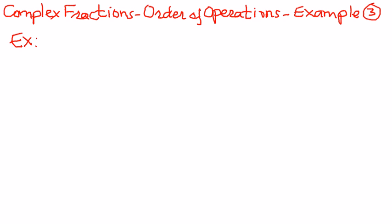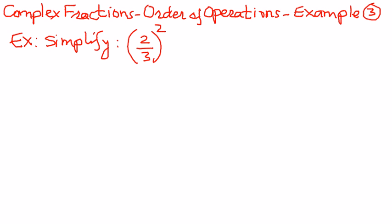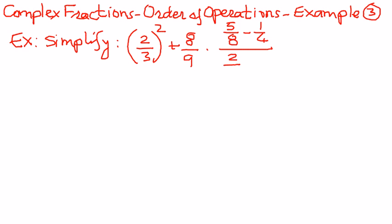We want to simplify this complex fraction: 2 over 3, this whole thing raised to the power of 2, plus 8 over 9 times 5 over 8 minus 1 over 4 — that's in the numerator. And in the denominator, we have 2 over 3 minus 1 over 6. This is the complex fraction, and we want to simplify it using order of operations.